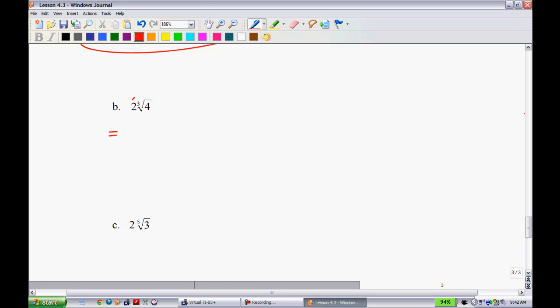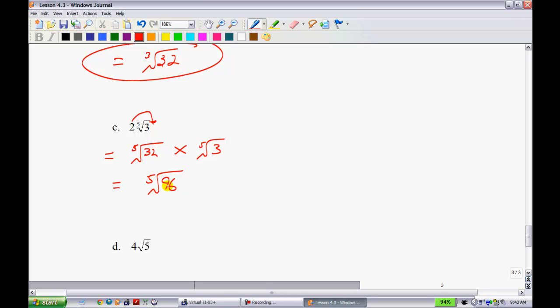Next one here, we're in cube root land. To put the 2 back inside, you don't just square it, you're going to cube it. That's the cube root of 8 times the cube root of 4, which gives you the cube root of 32. Now one to kick it up. This is 2 the 5th root of 3. To put this 2 back inside, you multiply 2 by itself 5 times. That's 32. This is the 5th root of 32 times the 5th root of 3, which gives me the 5th root of 96.